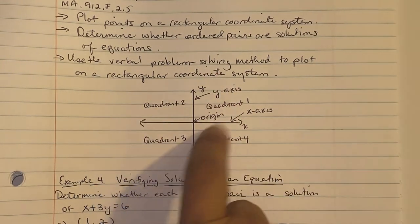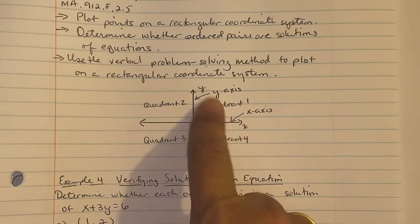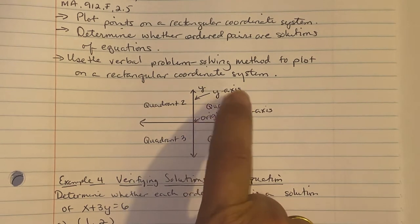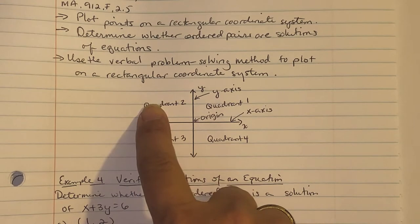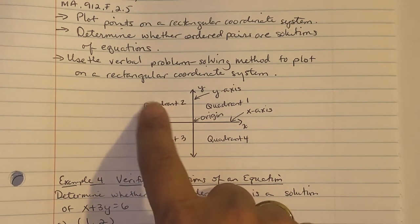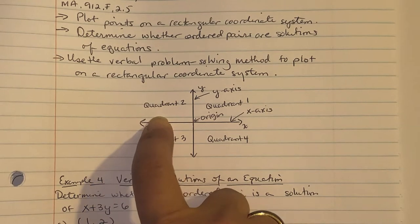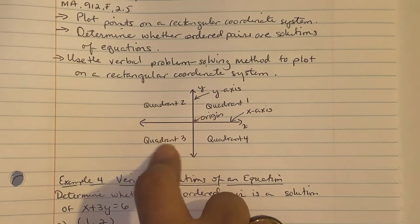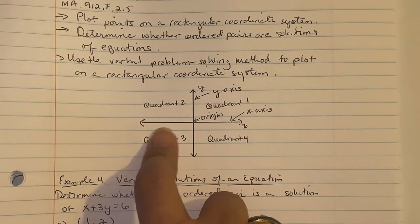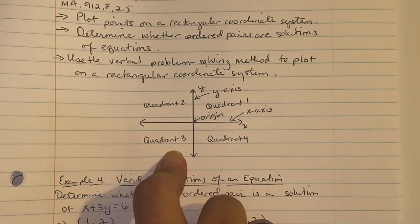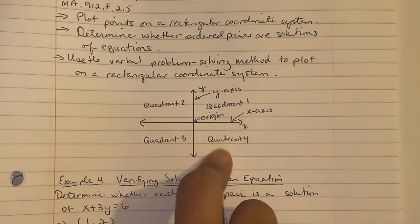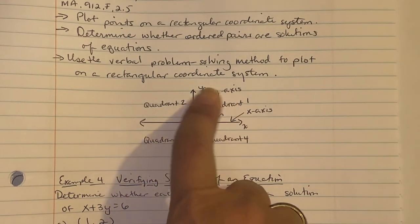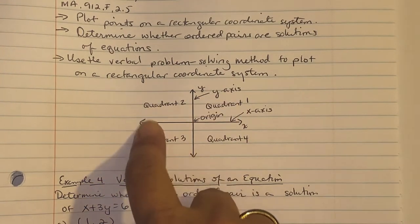The top right corner is Quadrant 1, where all values of x and y are positive. Going counterclockwise to Quadrant 2, x is negative and y is positive. Quadrant 3 has both x and y negative. Quadrant 4 has x positive and y negative. The origin is the neutral point at (0, 0).